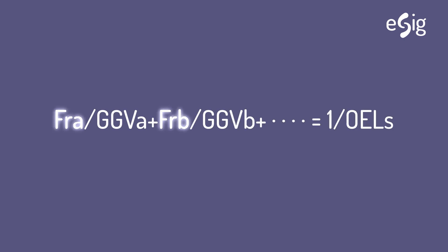Where FRA, FRB are the mass fractions of the components of a hydrocarbon group A and B, GGVA and GGVB are the exposure limits for the fractions A and B,